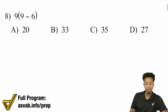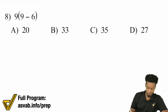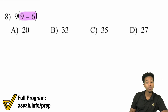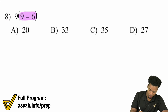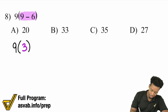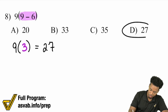Number 8: We have 9 times (9 minus 6). You'll do the parentheses first — 9 minus 6 is going to be 3. So we have 9 times 3, and 9 times 3 equals 27. That's D.